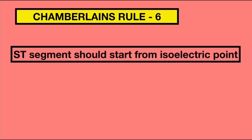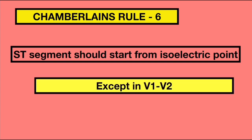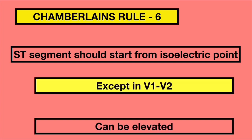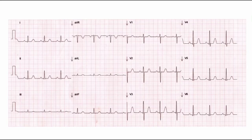Rule 6 states that except in lead V1 and lead V2, the ST segment should start from the isoelectric point. It can be a normal finding in V1 and V2 if it is elevated minimally. In this ECG, we can see that all ST segments started from an isoelectric point, even in V1 and V2.